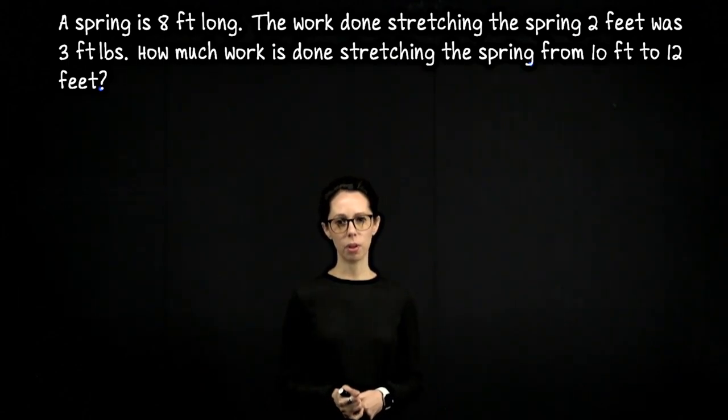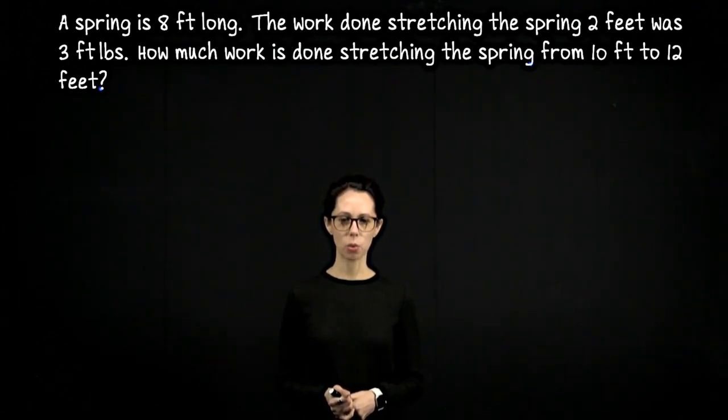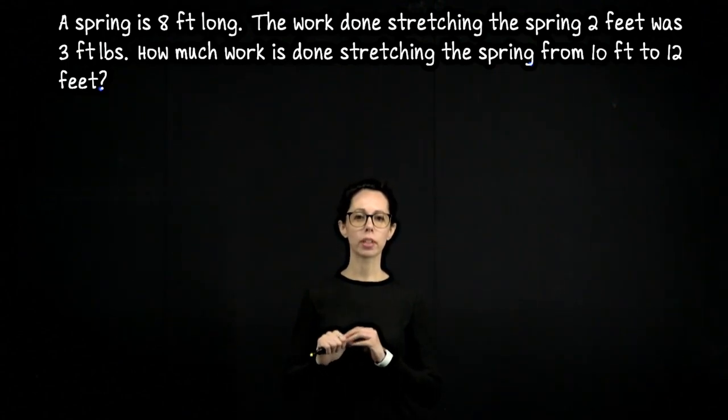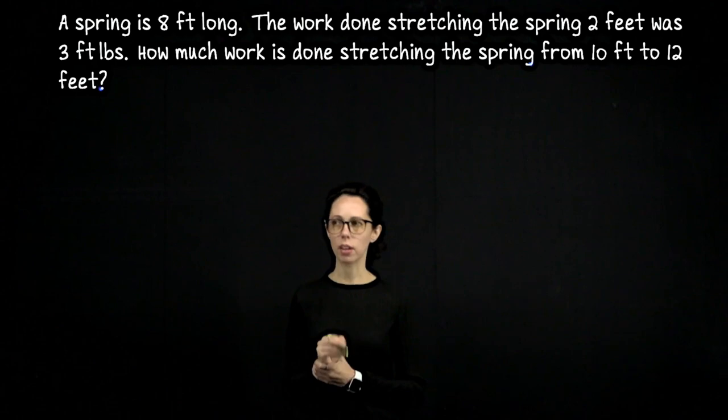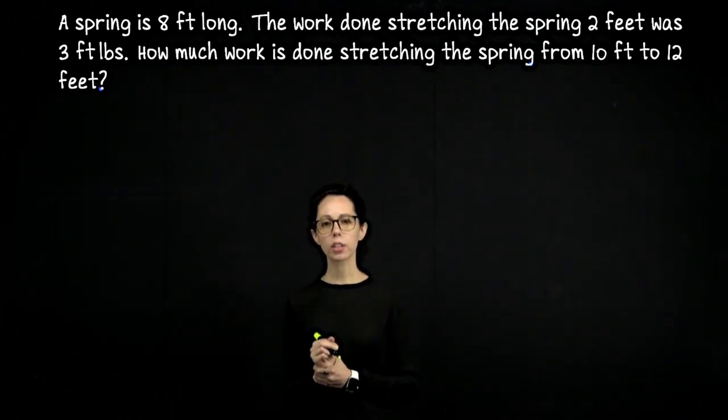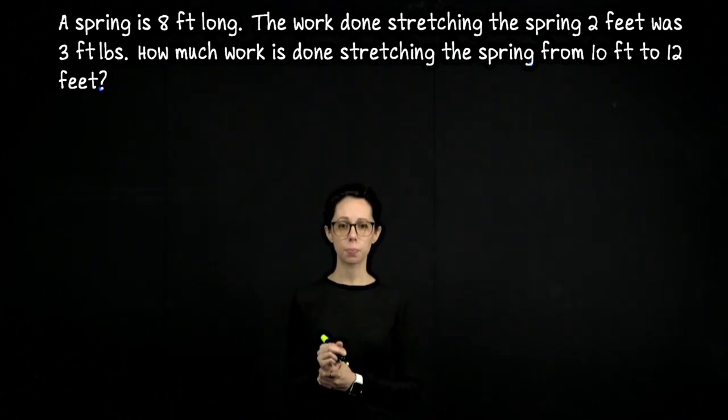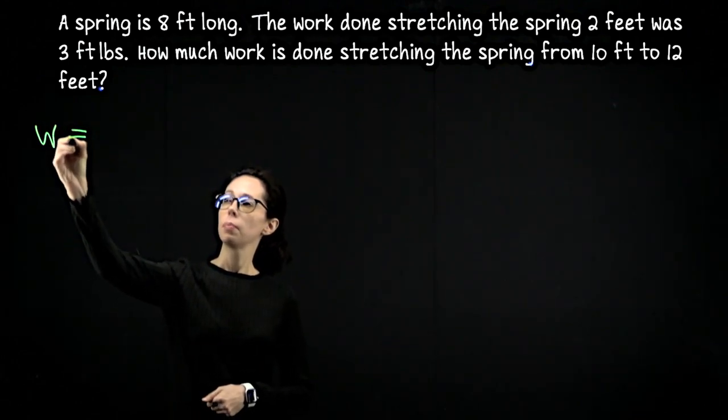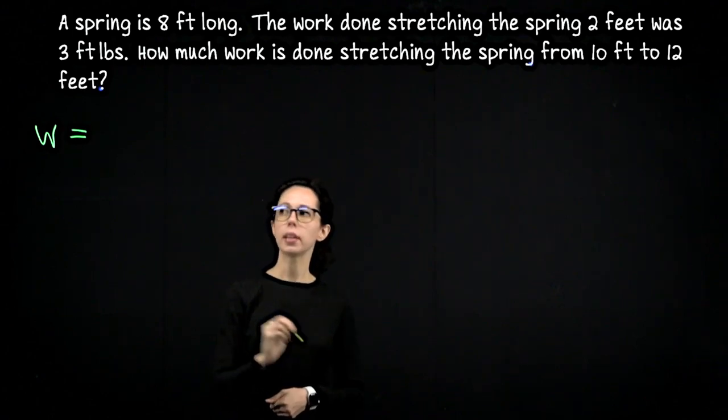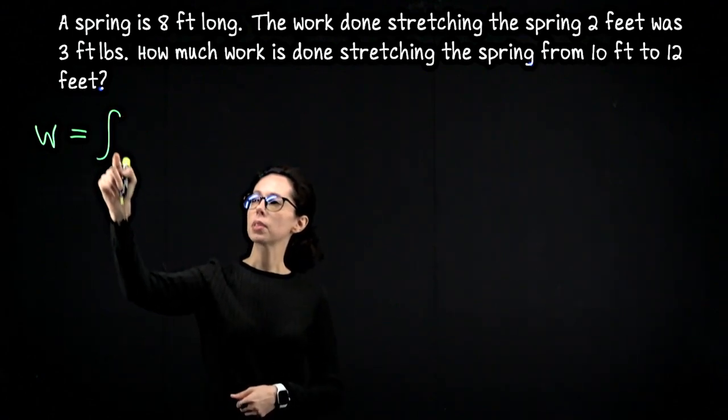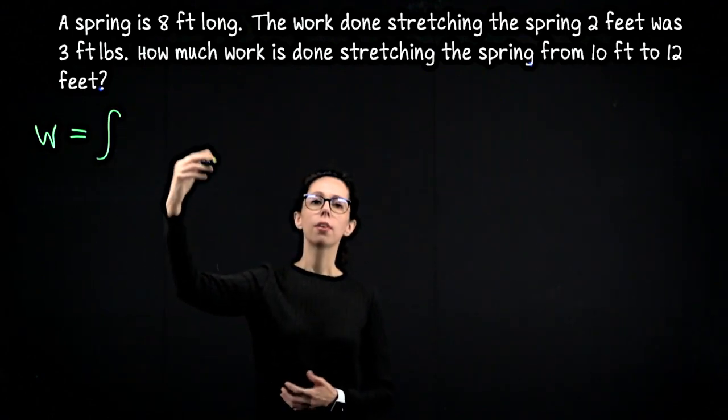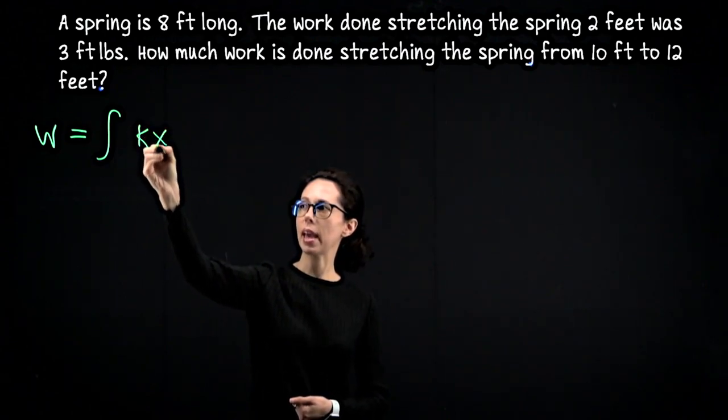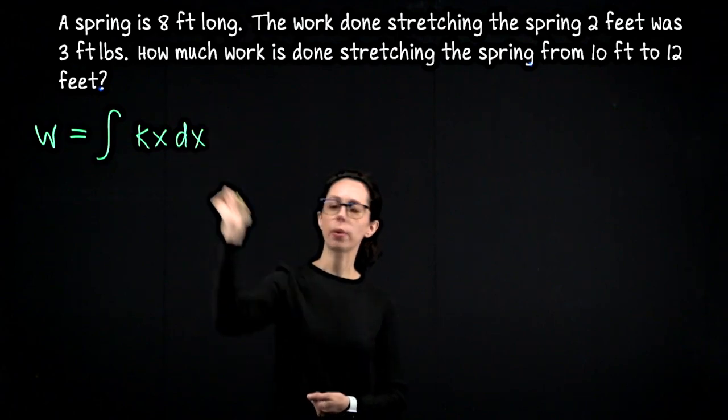In the last example, our first piece of information was about force. Here it's about work. So the equation we're going to write down will look a little bit different. In this situation, we are told the work done moving the spring. Let's recall first that the work done, because this is a variable force, is going to be an integral. We're going to integrate from some lower bound to some upper bound the force dx, where the force is kx, and we integrate with respect to x.